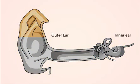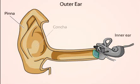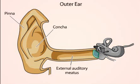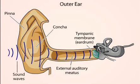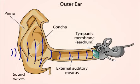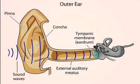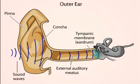The external ear, which consists of the pinna, concha, and auditory meatus, gathers sound energy and focuses it on the eardrum or tympanic membrane. The configuration of the external ear amplifies sound, particularly at the frequency ranges of 2 to 5 kHz, a range that is important for speech perception.